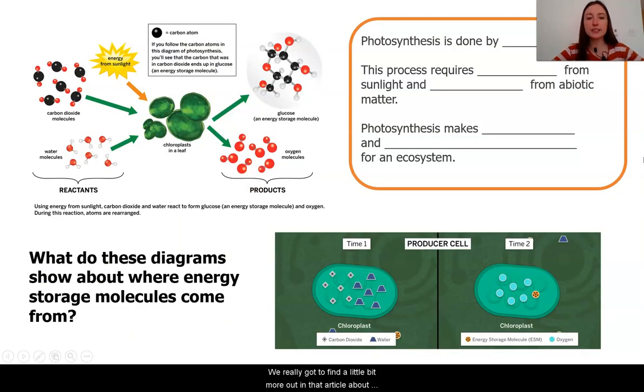We really got to find out a little bit more in that article about what we were seeing in our producer cell. What do these diagrams show about how photosynthesis is done? We saw in the digital model that it seemed to be something to do with this chloroplast inside of the producers. We saw carbon dioxide coming in and water also coming in, and then them coming together, and a little poof, and the oxygen and the energy storage molecule appeared.